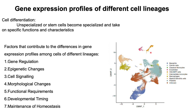In multicellular organisms, cells of different lineages — that is, different cell types — have different gene expression profiles primarily because of the process of cell differentiation. Cell differentiation is the process by which unspecialized cells or stem cells become specialized and take on specific functions and characteristics.